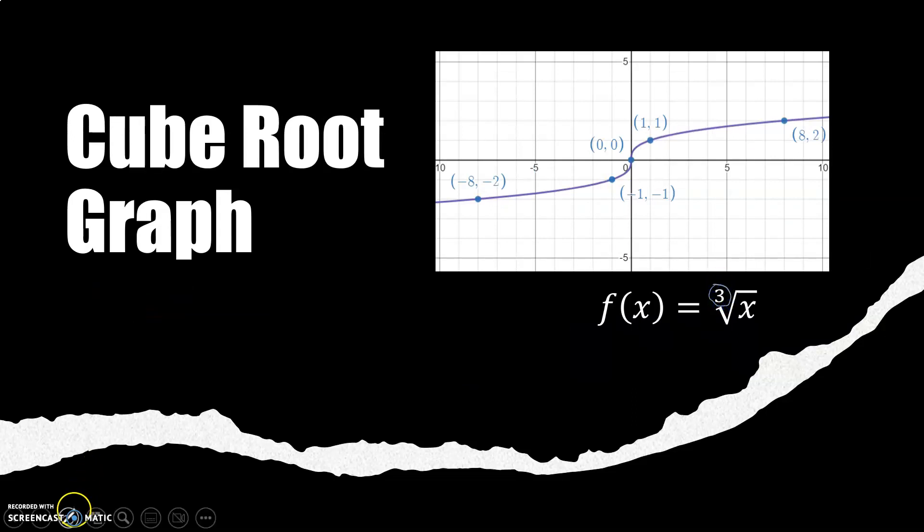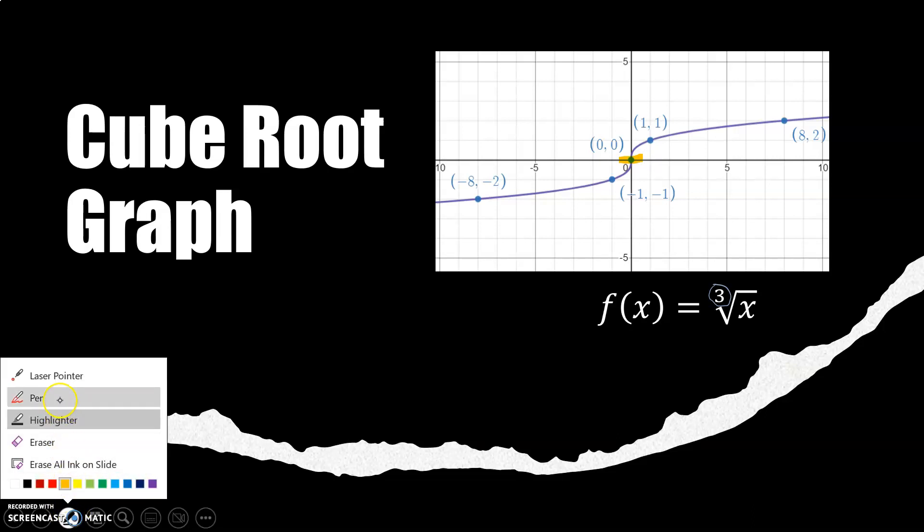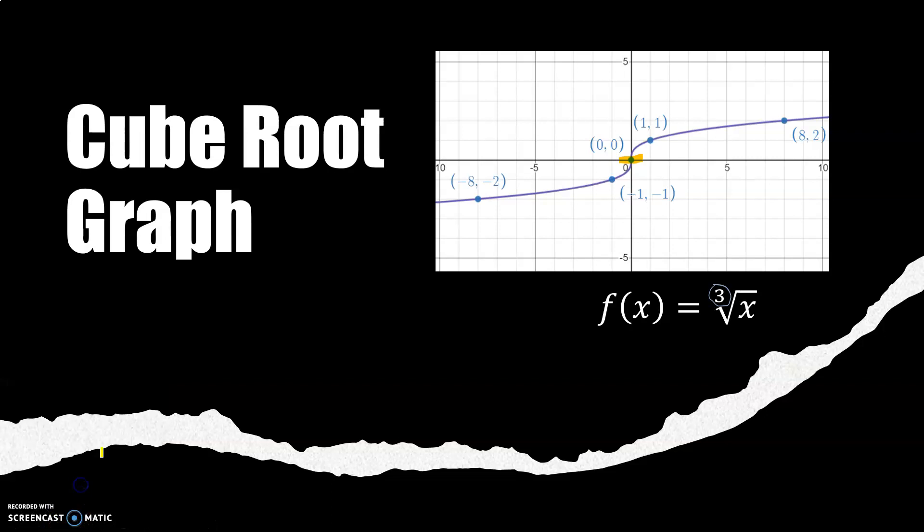The cube root graph also passes through the origin. So the cube root graph has, that's the point that you will translate. And then it has two points that you're going to stretch or compress. You're going to stretch or compress 1, 1 and also negative 1, negative 1. You'll stretch and compress by multiplying by the y-coordinate.